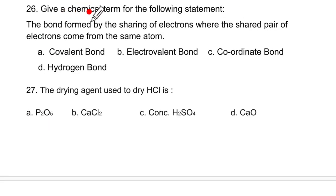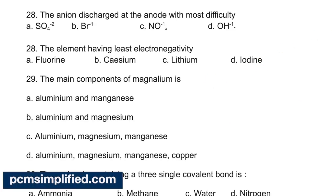Give a chemical term for the following statement. A bond formed by sharing electrons where the shared pair of electrons come from the same atom, which means it is coordinate covalent bond. The drying agent used to dry hydrogen chloride is concentrated sulfuric acid.